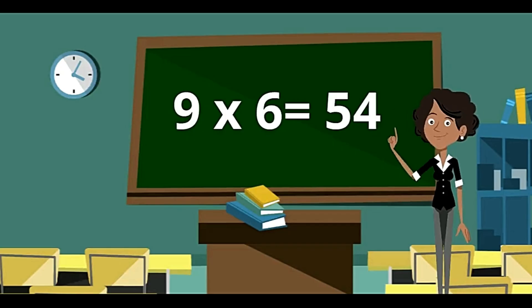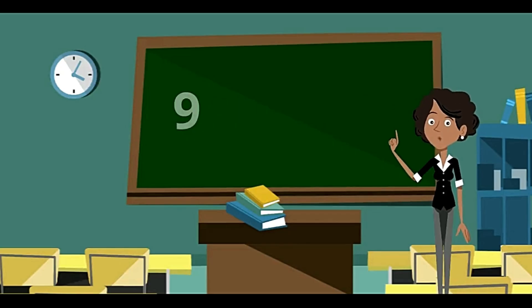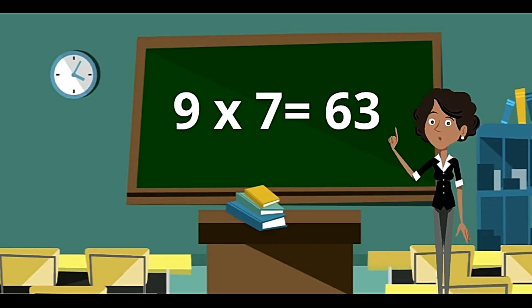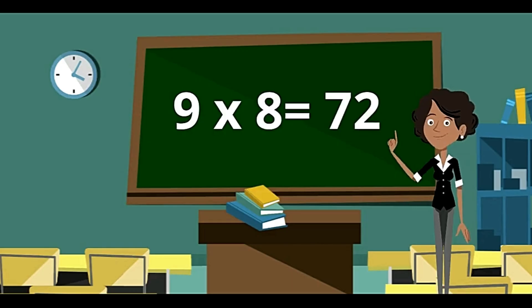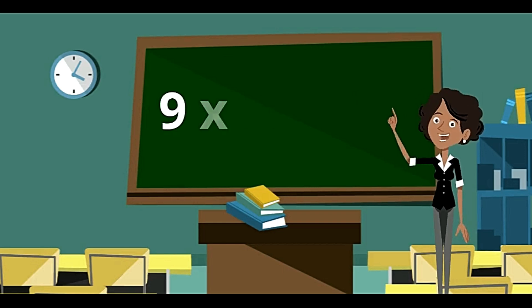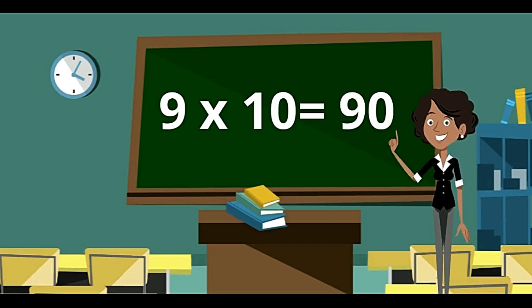9 sixes are 54. 9 sevens are 63. 9 eights are 72. 9 nines are 81. And 9 tens are 90.